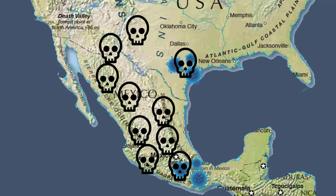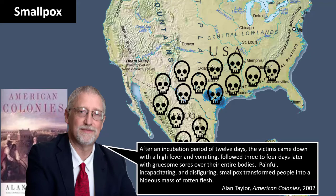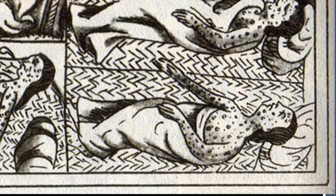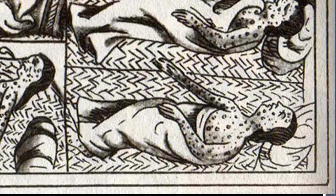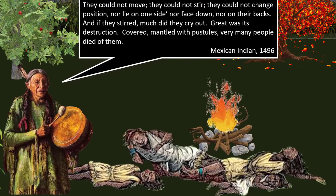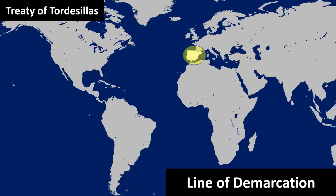Smallpox was a highly contagious airborne disease. Those who cared for the sick were the first exposed and the cycle continued from there. As Alan Taylor describes, after an incubation period of 12 days, victims came down with a high fever and vomiting, then gruesome sores over their entire bodies. Painful, incapacitating, and disfiguring, smallpox transformed people into a hideous mass of rotten flesh. A Mexican Indian describing the effects wrote: 'They could not move. They could not stir. They could not change position, nor lie on one side, nor face down, nor on their backs. If they stirred, they cried out. Great was the destruction. Covered, mantled with pustules, very many people died from them.'